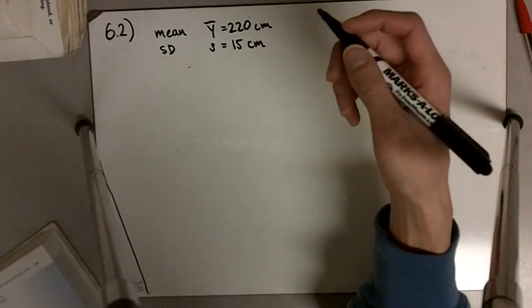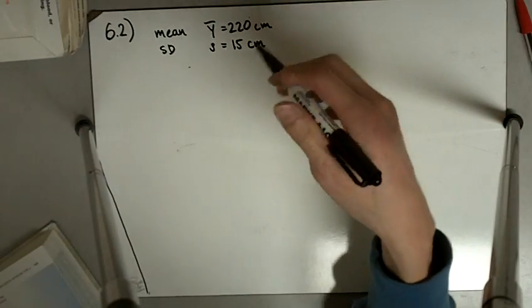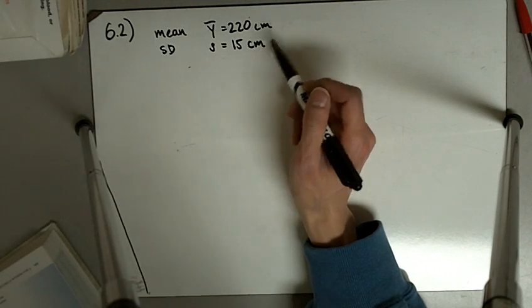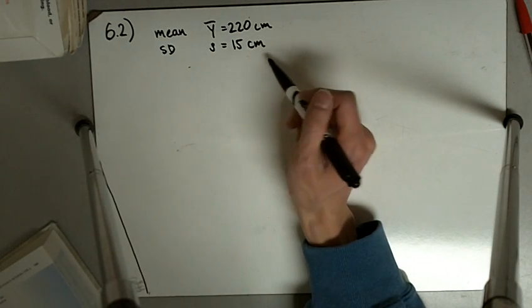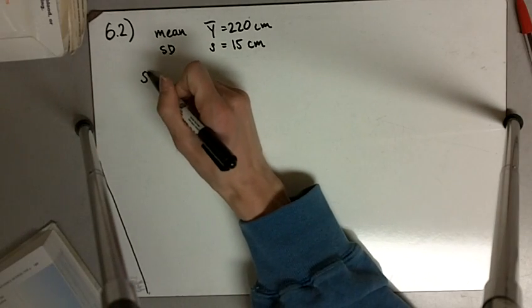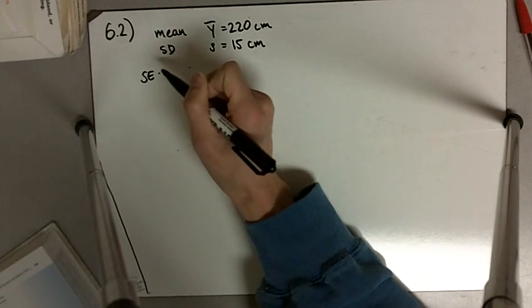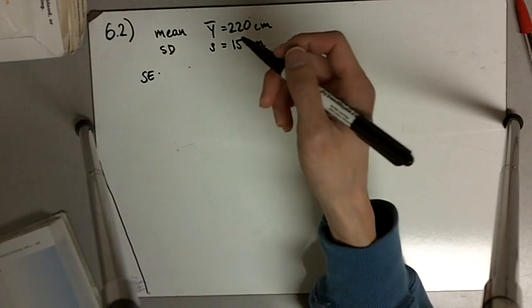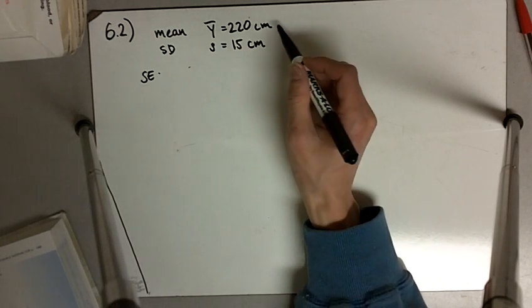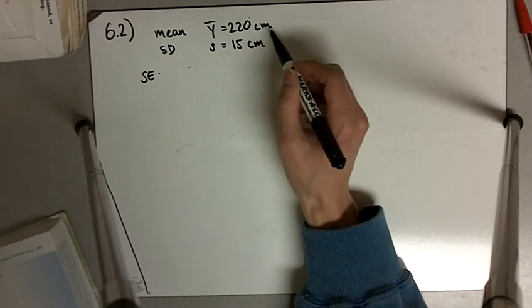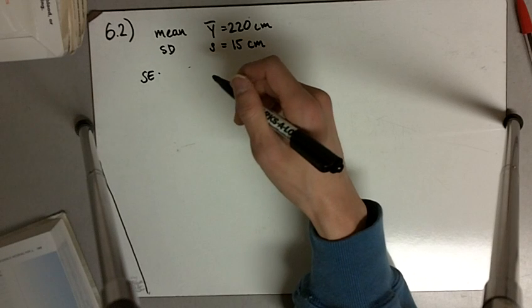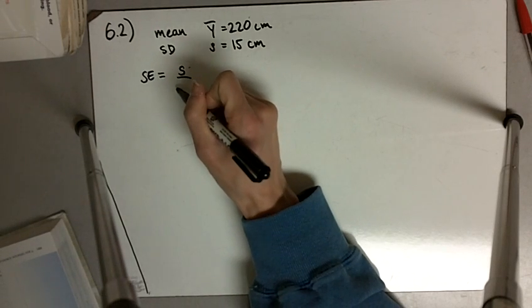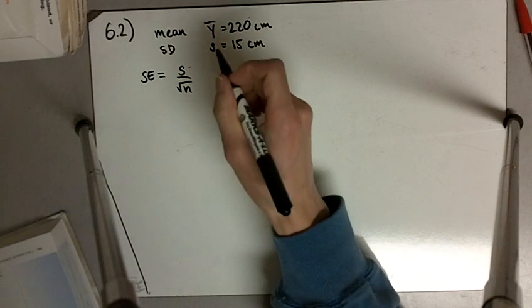The standard deviation is the dispersion within the data, and the standard error is an estimate of how much error there is in this estimate of the mean. And that depends on sample size. So the standard error is s divided by the square root of n.